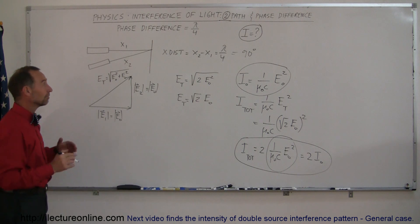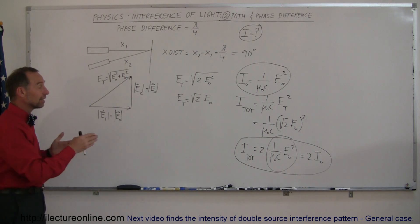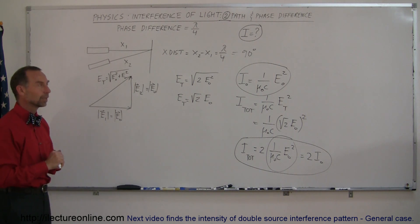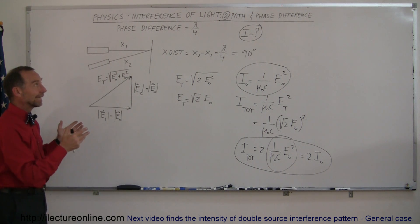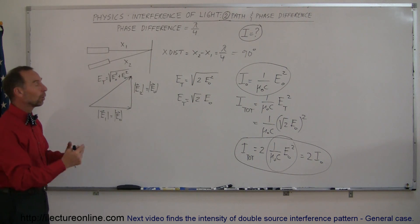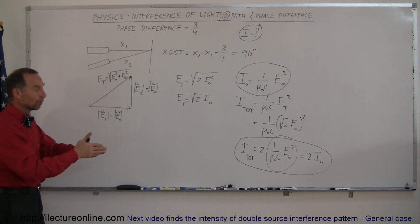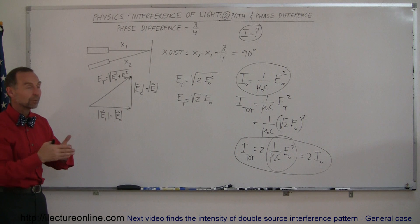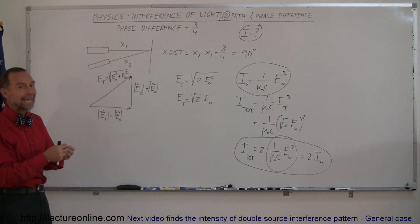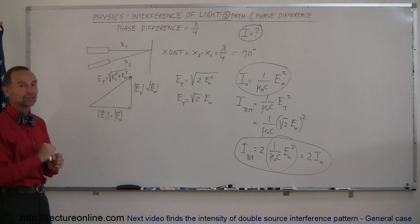Remember that if the beams come together completely in phase, the intensity would be four times the intensity of either one beam. That's a special case. In the next video, we're going to show you the general case — what would be the intensity when two beams come together and interfere when the phase difference could be anything. We'll show you the general case in the next video.